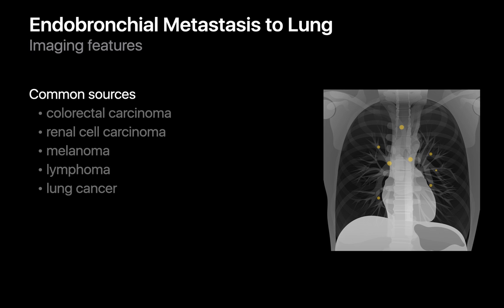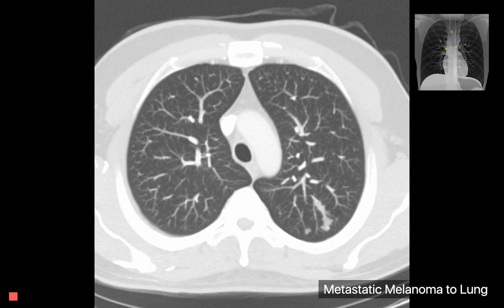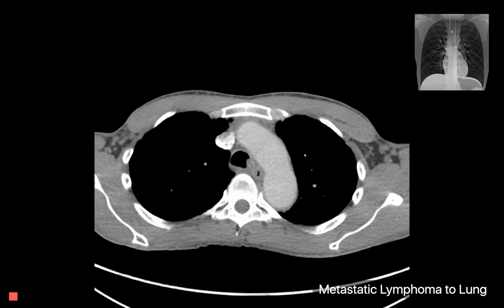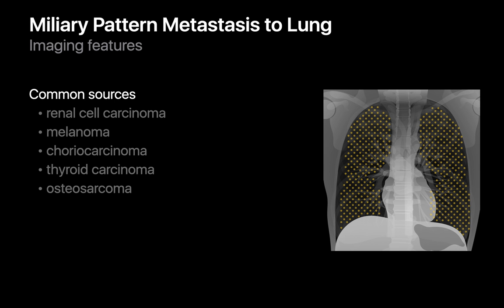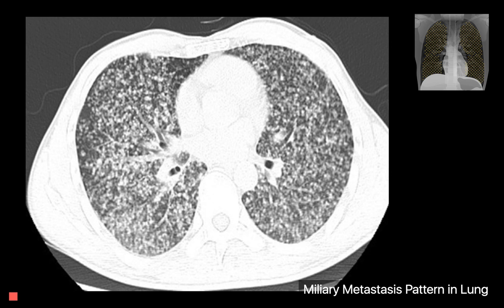Endobronchial metastases are a more uncommon presentation of metastasis to lung. Most common sources are colorectal cancer, renal cell carcinoma, melanoma, lymphoma, and lung cancer. In a case of melanoma metastatic to lung, the metastasis may resemble a mucus plug but with less straight margins and a more nodular or lobulated morphology. Miliary pattern metastases are another rare presentation, with most common sources being renal cell carcinoma, melanoma, choriocarcinoma, thyroid carcinoma, and osteosarcoma. The pattern resembles the diffuse random nodular interstitial pattern seen in diseases such as miliary TB.